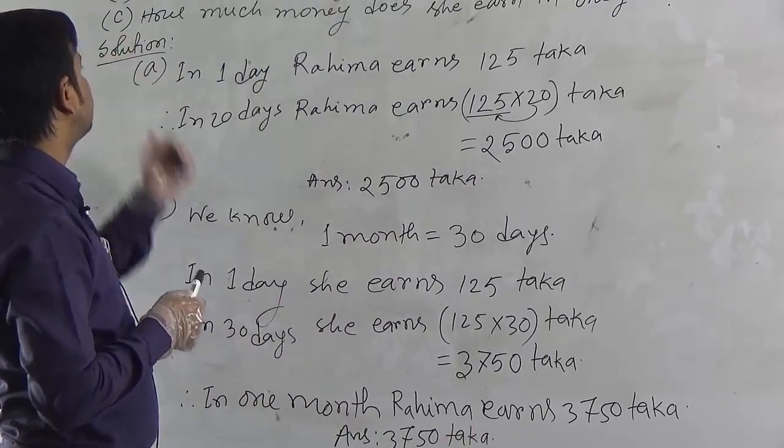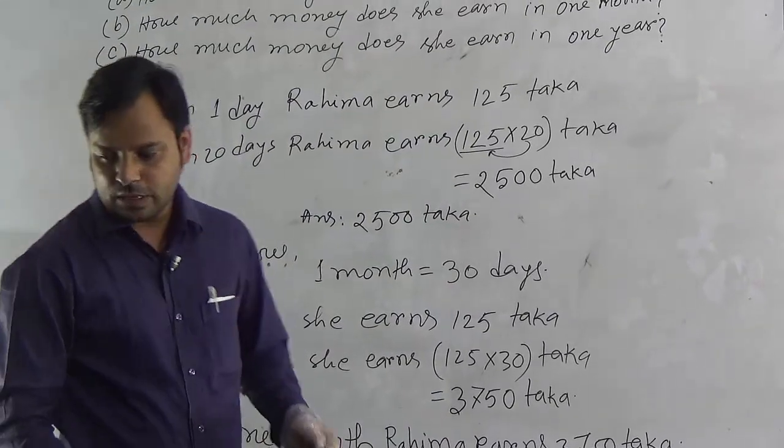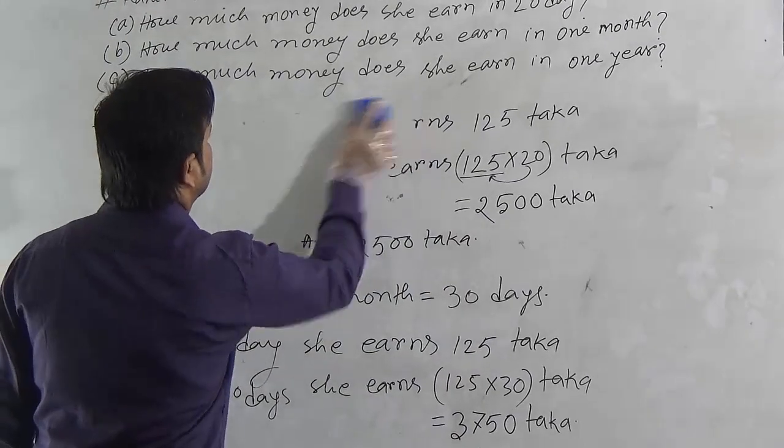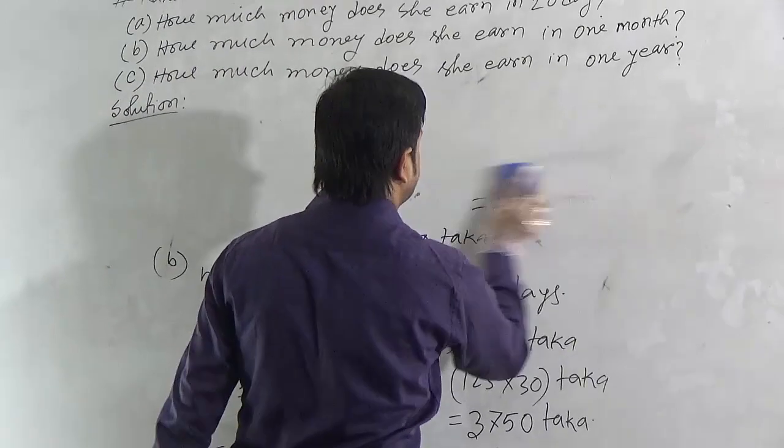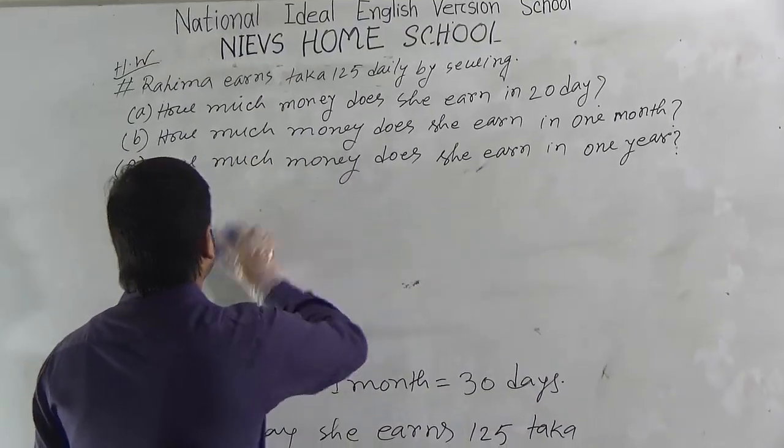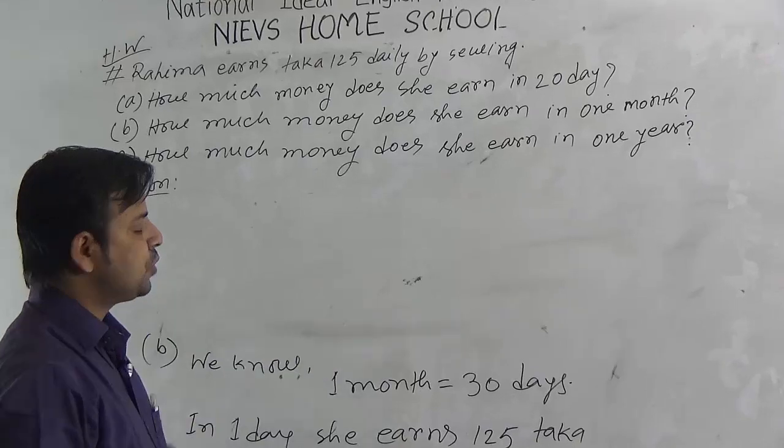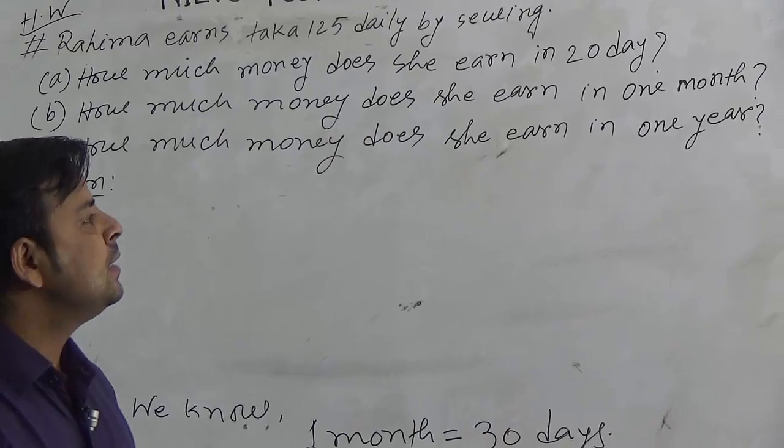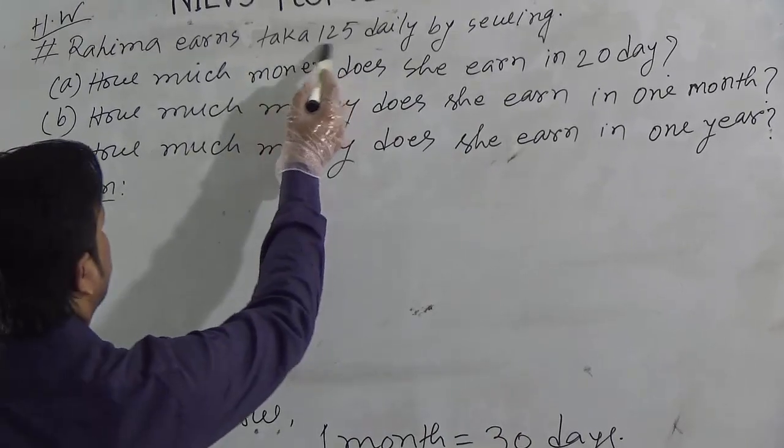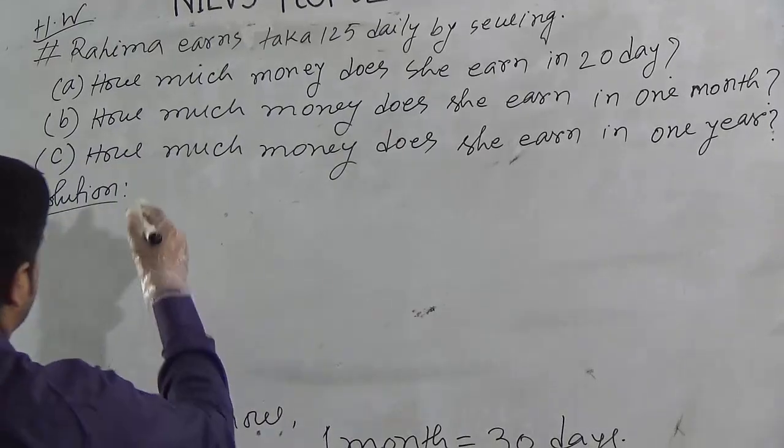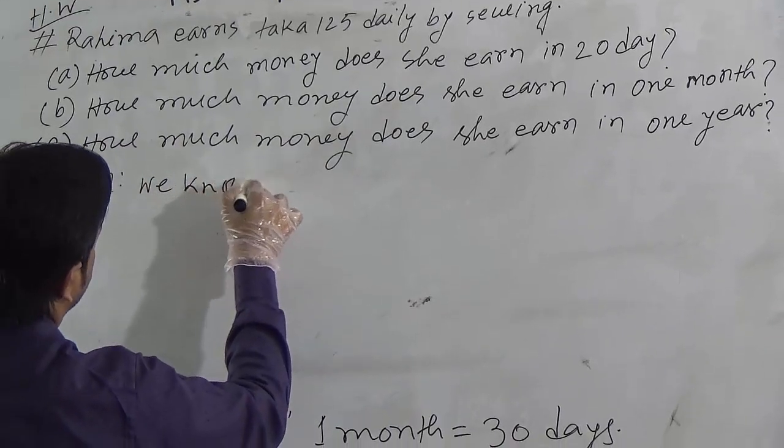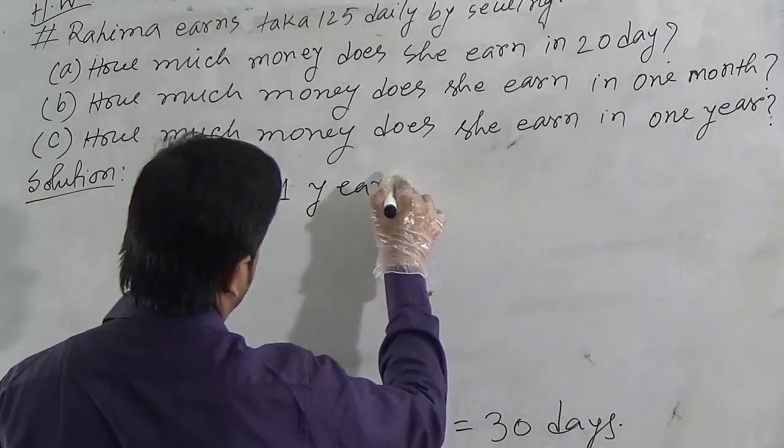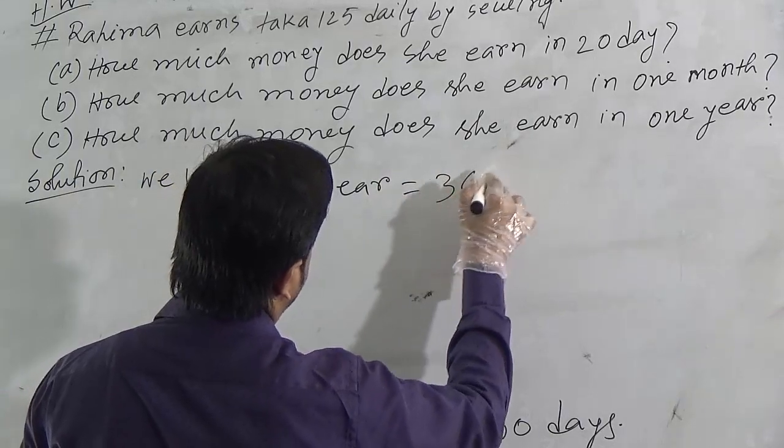Now, last question C. I have to solve question C now. What is question C? Question C is how much money does she earn in 1 year? To solve this, at first we have to know 1 year is equal to how many days as the information given in days. So, we can write we know 1 year equal, 1 year is equal to 365 days.